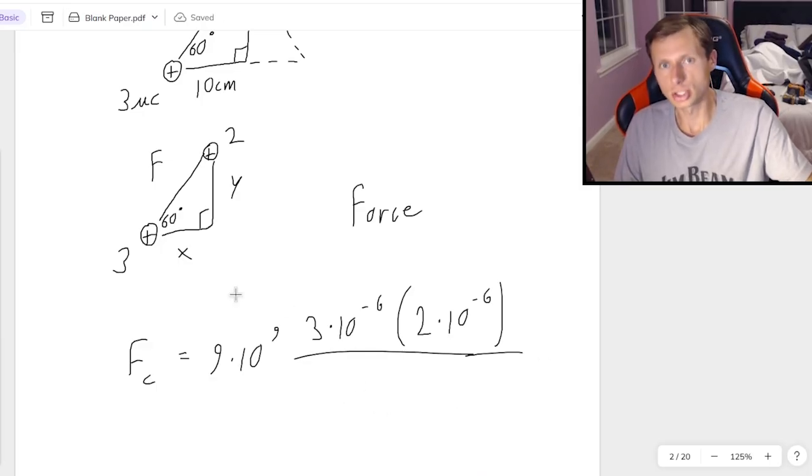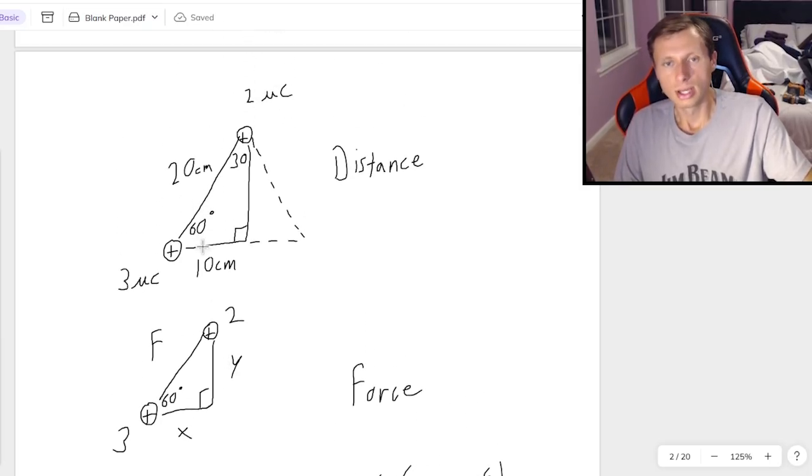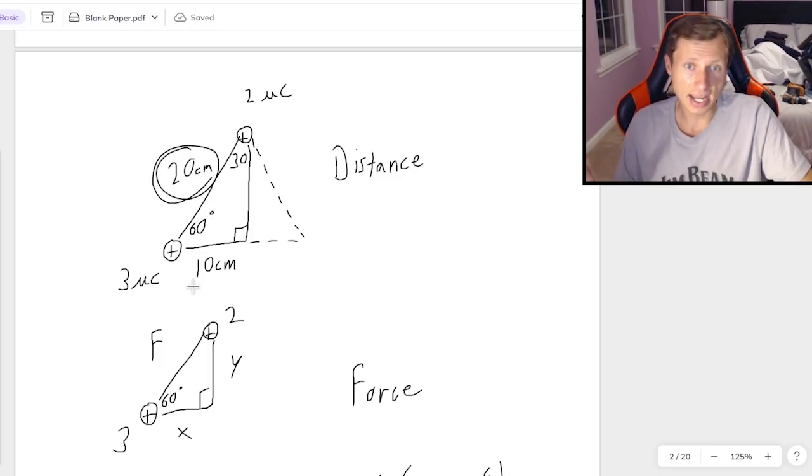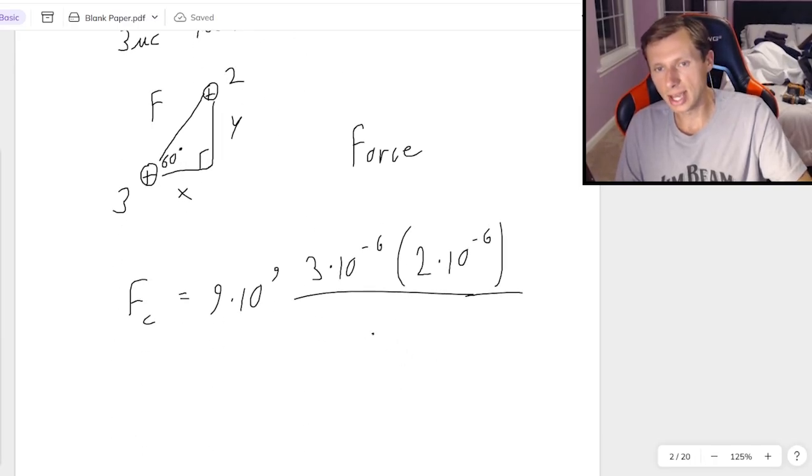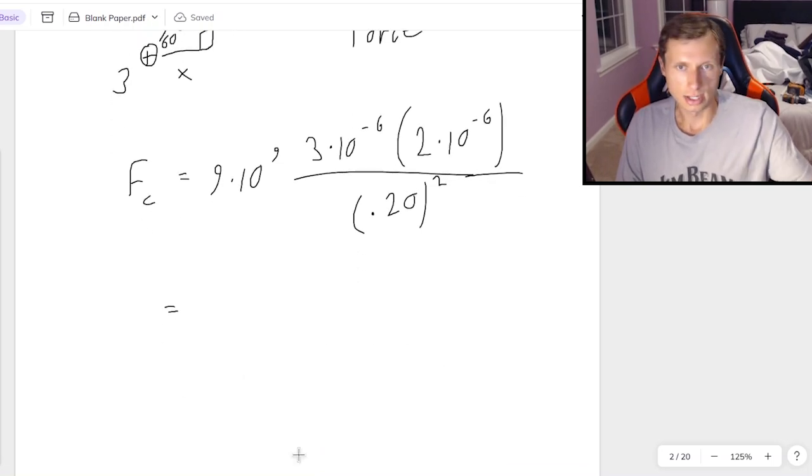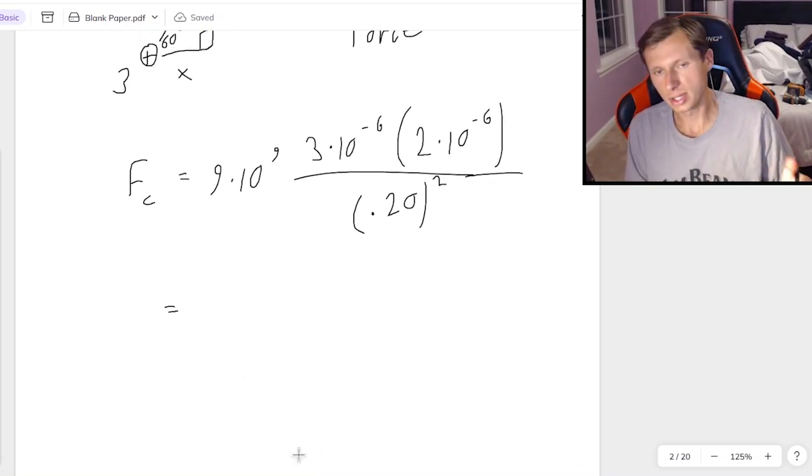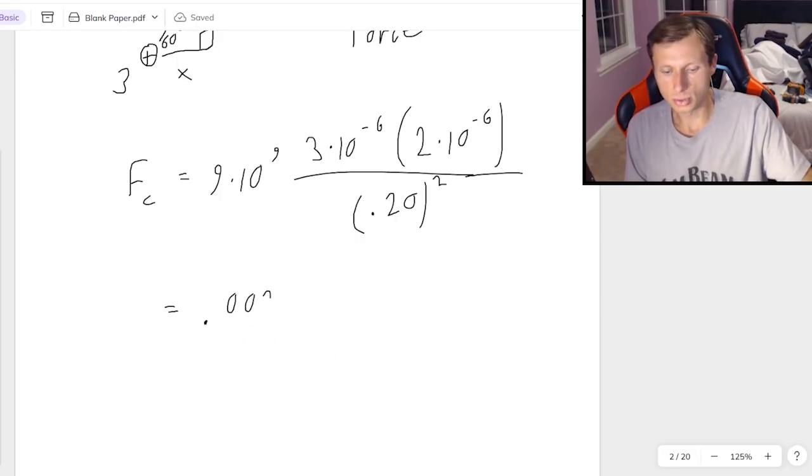And then in the denominator, this is where that distance is going to come in. It's going to be the 20 centimeters. Yes, even though it's at a diagonal, that is the distance between them. So I have to write again, 0.20, and that's squared. When I plug this in the calculator, I'm going to get what the force is. The force in this case is 0.00216 Newtons.